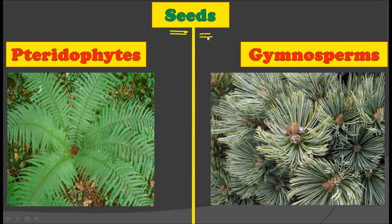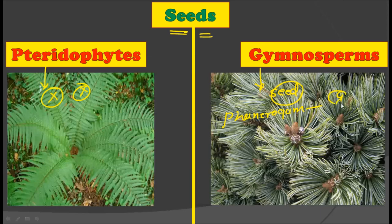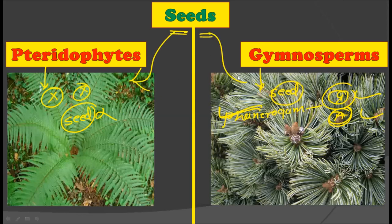The next difference relates to seeds. Pteridophytes do not show the presence of any seed, but gymnosperms produce seeds. Seed-producing plants are collectively called phanerogams, which include gymnosperms and angiosperms. Pteridophytes do not produce any kind of seed and therefore cannot be considered phanerogams. So seeds are absent in pteridophytes but present in gymnosperms.